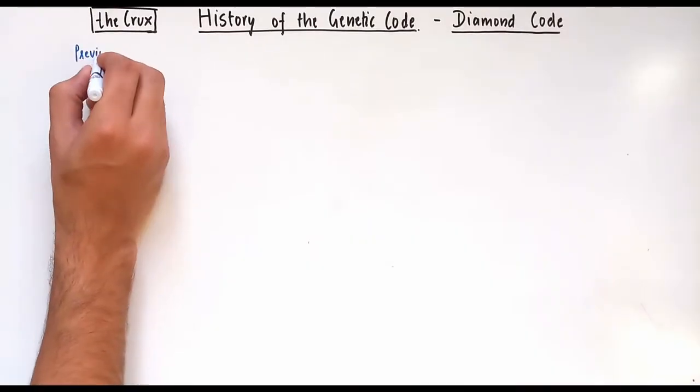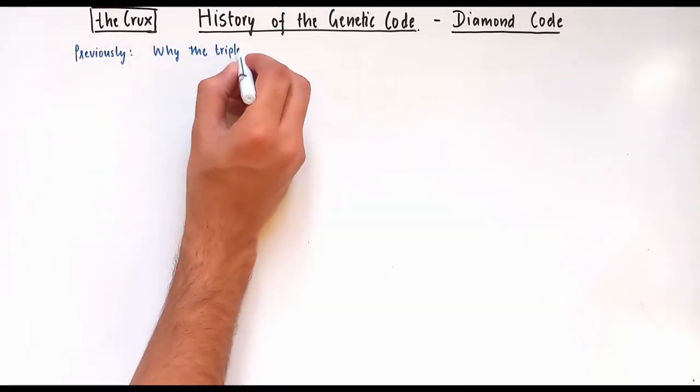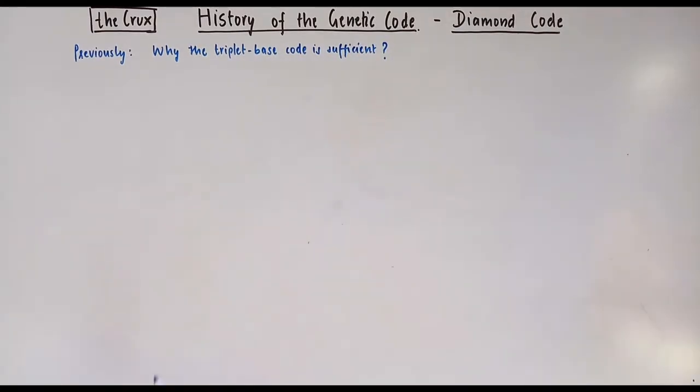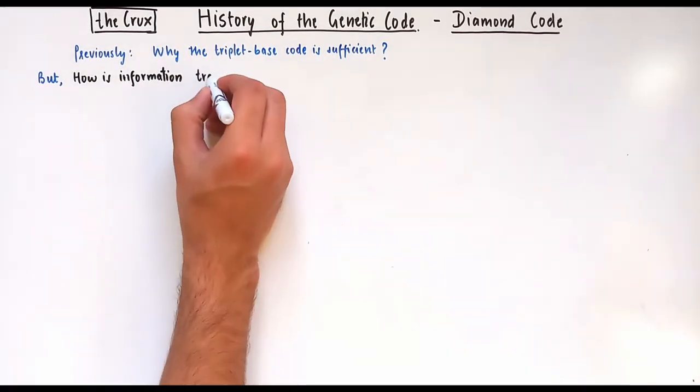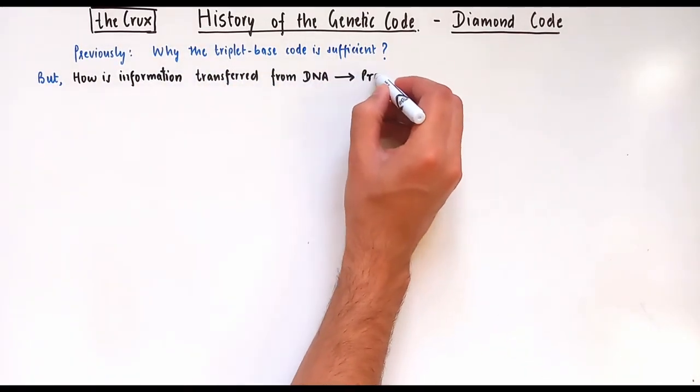In our previous video, we discussed why might a triplet base code suffice as a genetic code, but we didn't discuss how might the information be transferred from the DNA to the protein.